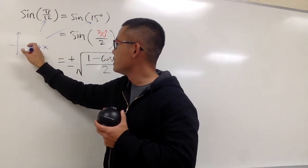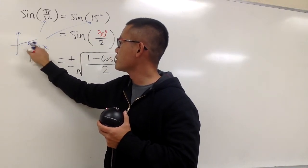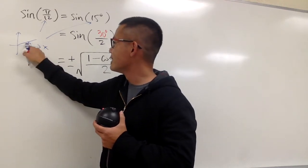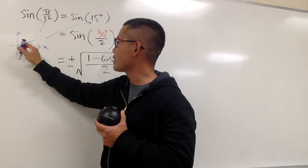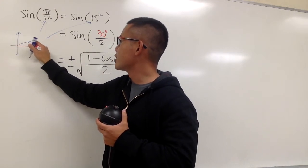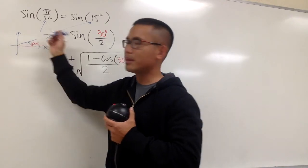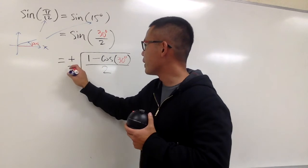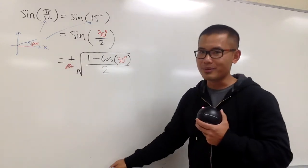Refer back to the x and y coordinate plane. You know 15 degrees is going to be just somewhere right here, so your angle, your terminal side is going to be in the first quadrant. That means the sine value will be positive, because this is going to be positive y value and also positive hypotenuse. So, positive sine value, let's get rid of the negative sign. That's what we have to do all the time.